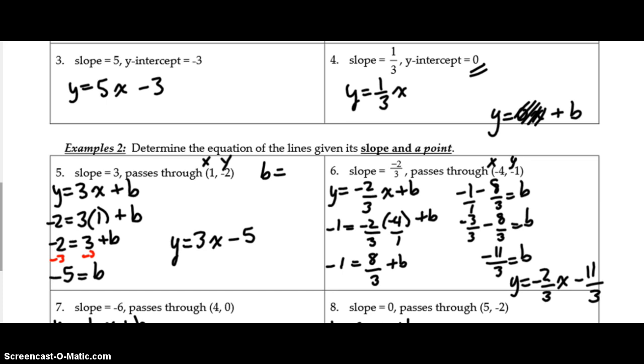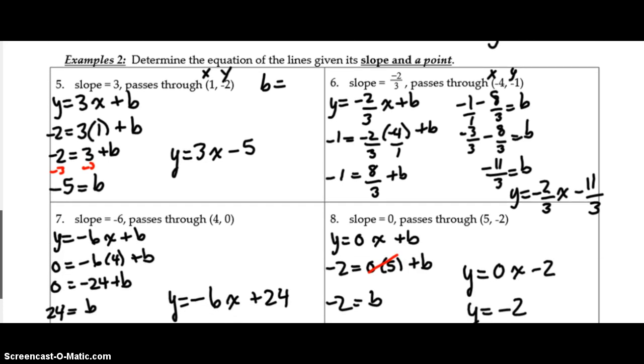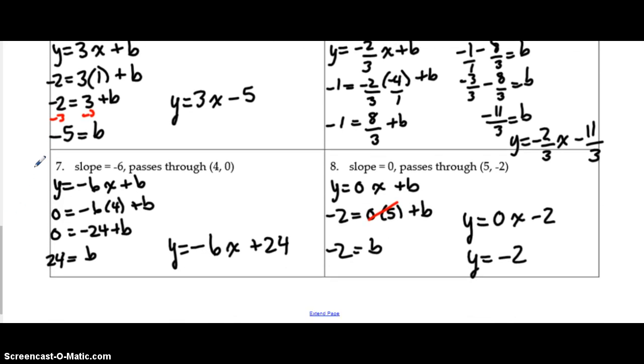So welcome back to the video. I want to see what you guys have now for number 7 and 8. Checking your answers with mine here. Substituting your slope, substituting your coordinate, and solving for that y-intercept. So you should have positive 24 for your y-intercept for number 7.